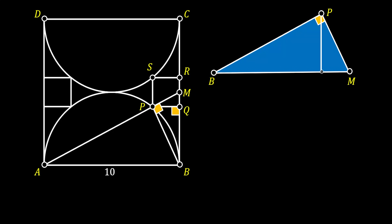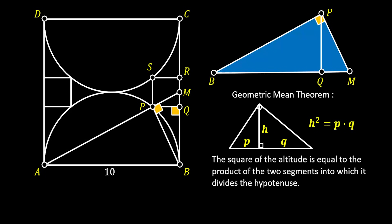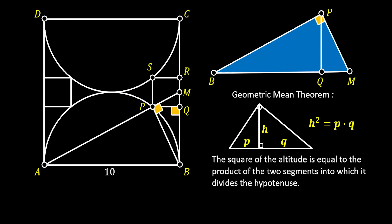Let's isolate this triangle and take a closer look at it. Let's pull its height PQ and use one really interesting theorem on this triangle, which is called the Geometric Mean Theorem. This theorem states that if we have a right-angled triangle and we pull the height from the corner of the right angle, this height will divide the hypotenuse into two segments, which we can label as P and Q. Then the Geometric Mean Theorem states that the square of the altitude is equal to the product of the two segments into which it divides the hypotenuse.